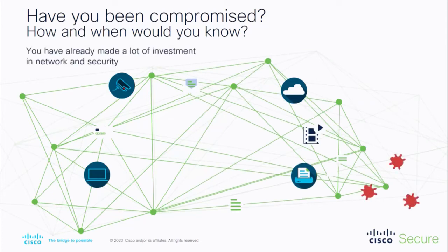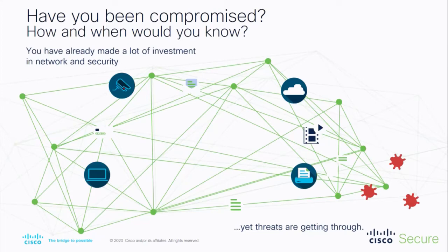We talked about how threats are evolving. Cisco recently published an internet report which said there's going to be 29.3 billion devices in the network by 2023, and your cybersecurity attack surface is going to expand to about 15.4 million attacks by 2023 globally. That's an astounding number, and that's when you need automation — your AI and ML tools to kick in and help you identify those high-fidelity alerts. You cannot be sifting through more than 5,000 alerts per day, which is what we learned from our cyber fatigue study through the new CISO benchmark study that just came out yesterday.